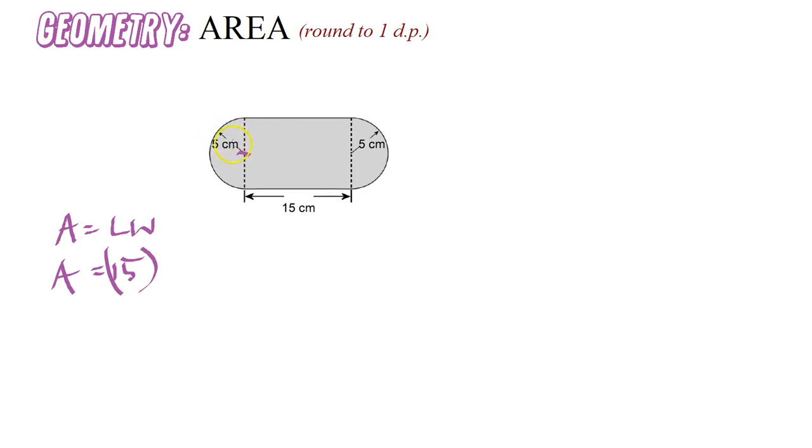The radius of the circle is 5, so we know that half of that base is 5, and the other half must be 5 as well. So the whole width from here to here is 10.